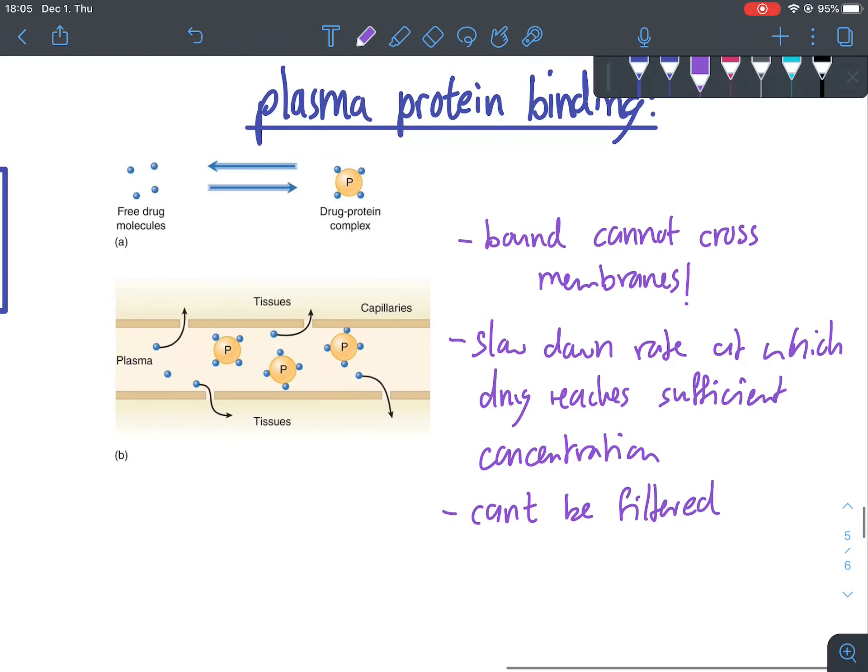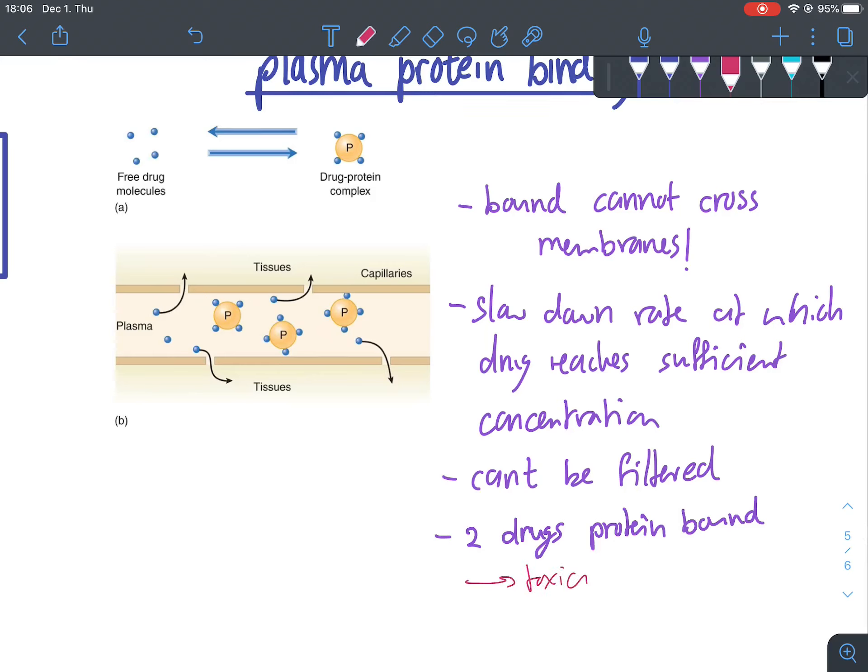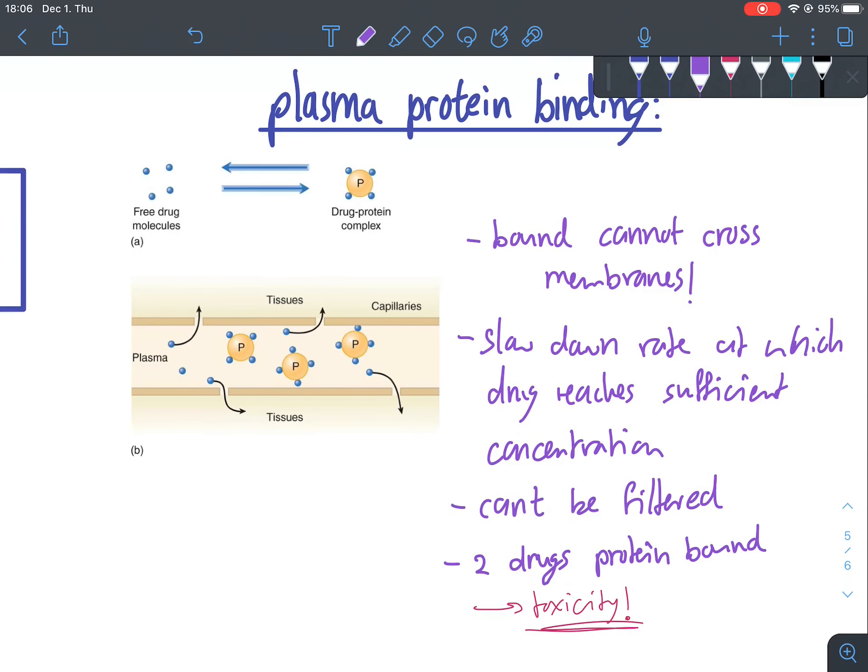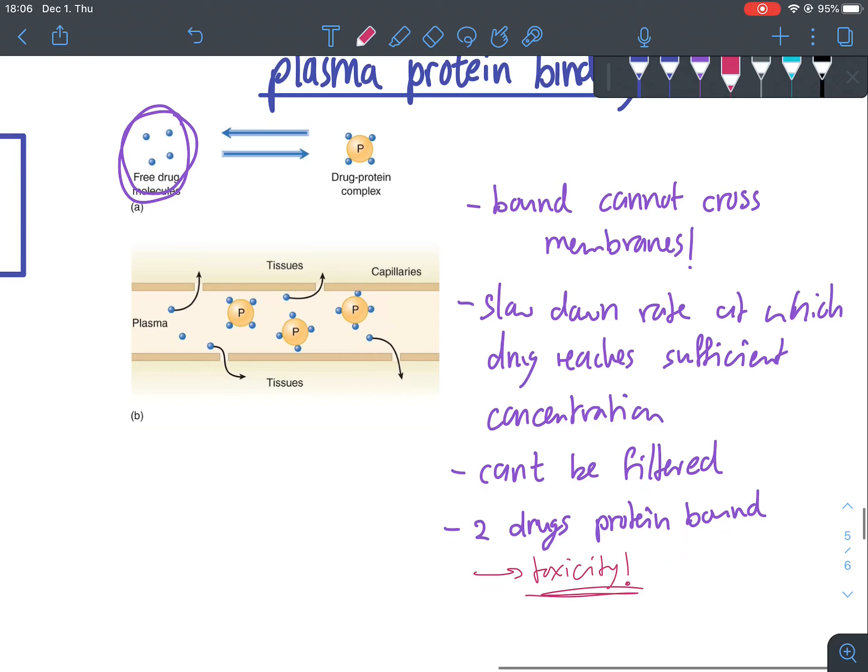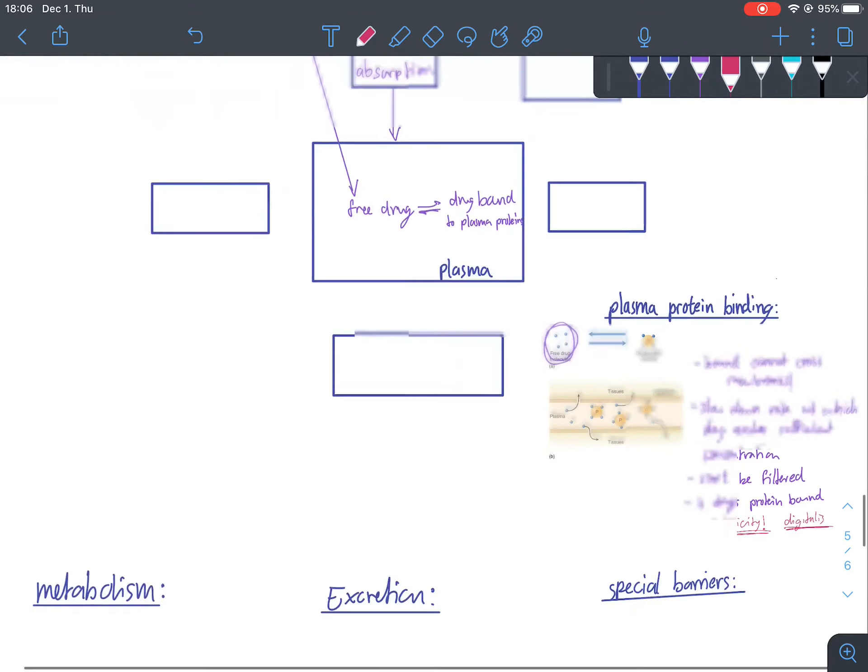And this is important for us to keep in mind if we're giving two drugs that are both highly protein bound, specifically if they compete for the same protein. In this case, we need to think of some toxicity issues. Because if both of these want to go for the same protein, then you'll obviously understand we will have a higher level of free drug than we were expecting in case we give this drug on its own. Because they have to compete for the same amount of protein. And this could be dangerous in case, for example, in digitalis. Because if this is even slightly higher in concentration in the plasma, that's going to actually be toxic for our patient.